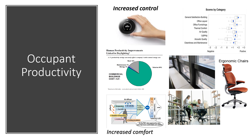You can use occupant surveys, which can cover layout, furnishings, thermal comfort, air quality, lighting, acoustic quality, cleanliness, and maintenance of the spaces, to help you gather data on the effectiveness of your strategies.